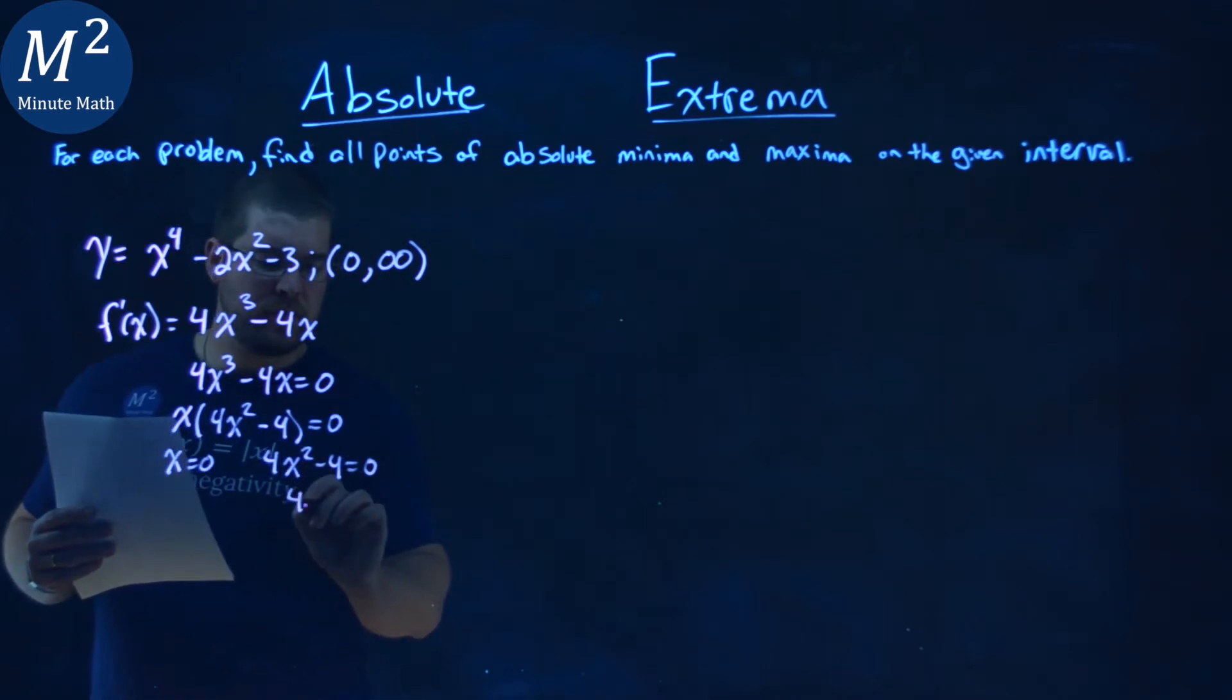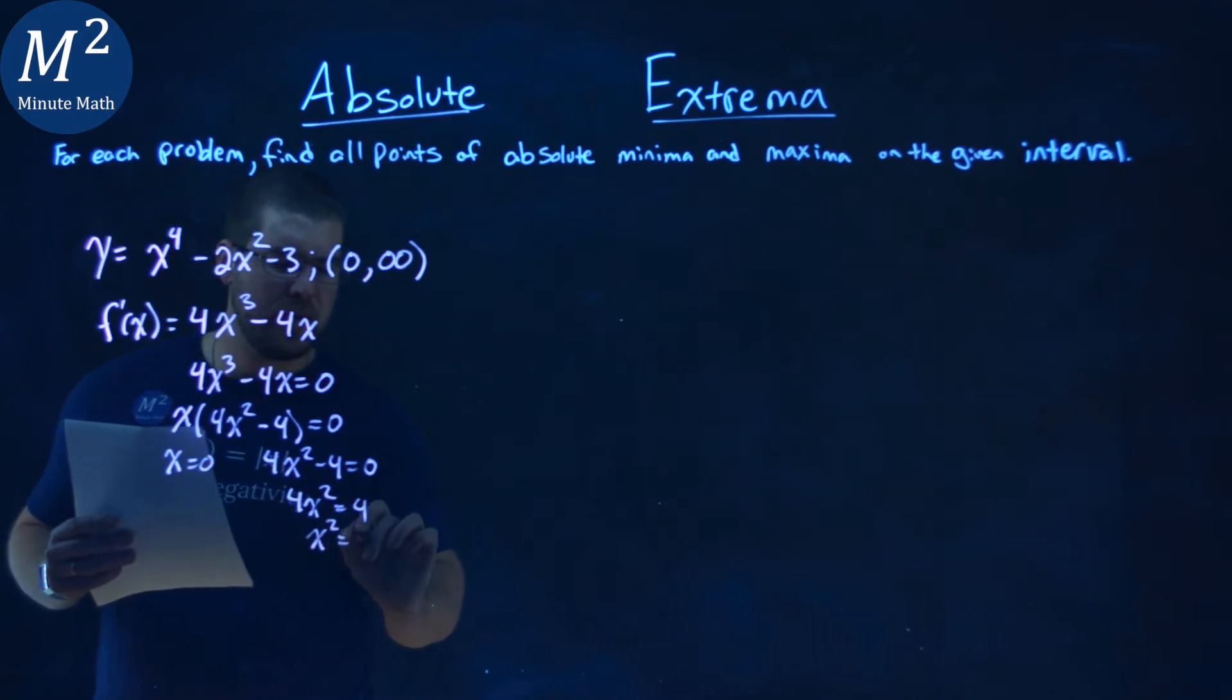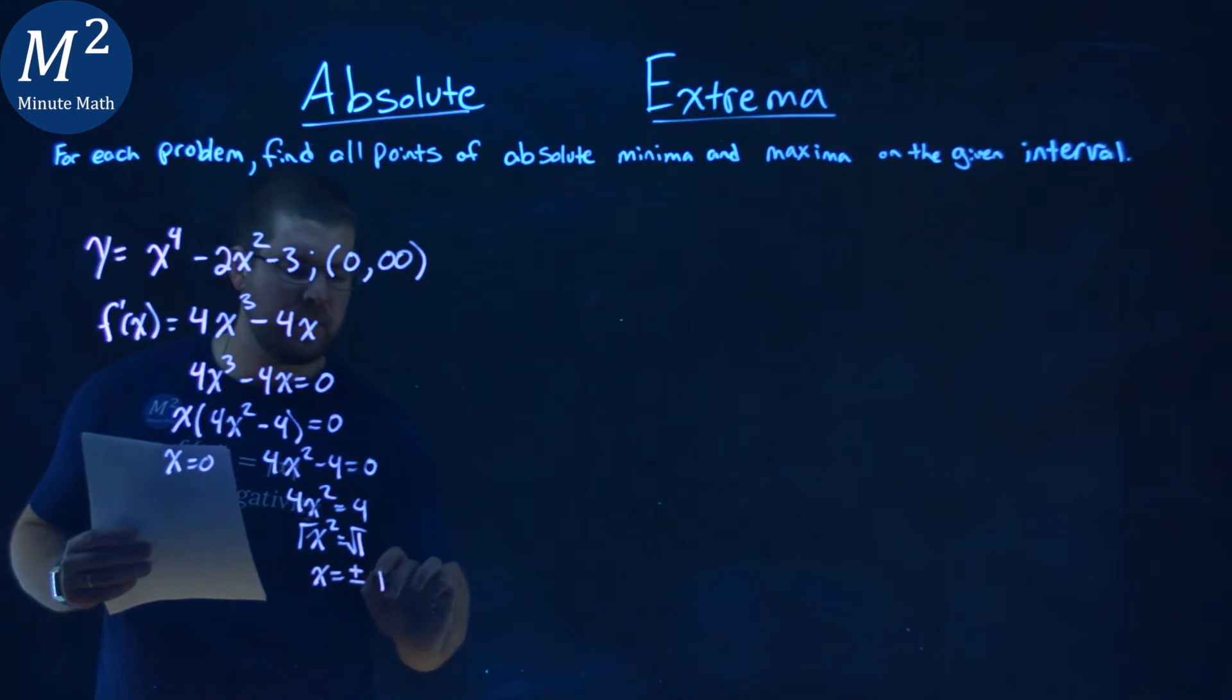4x squared equals 4, divide both sides by 4, and x squared equals positive 1. So, square root both sides, we got plus or minus the square root of 1, which is just 1, so x equals plus or minus 1.